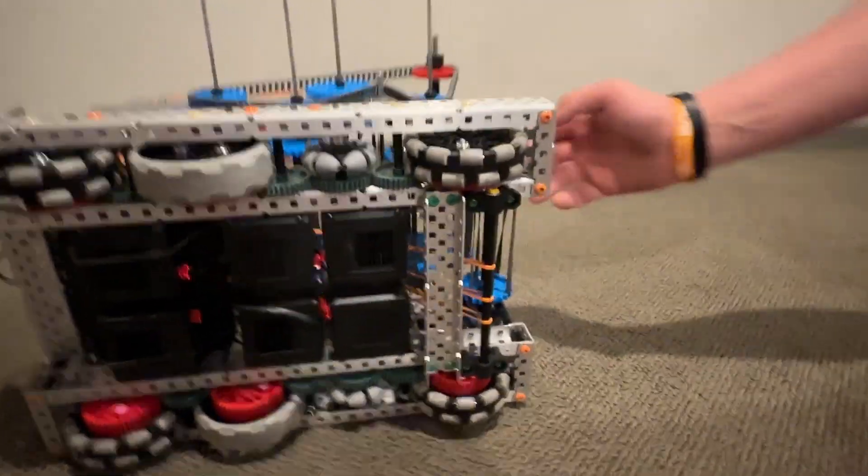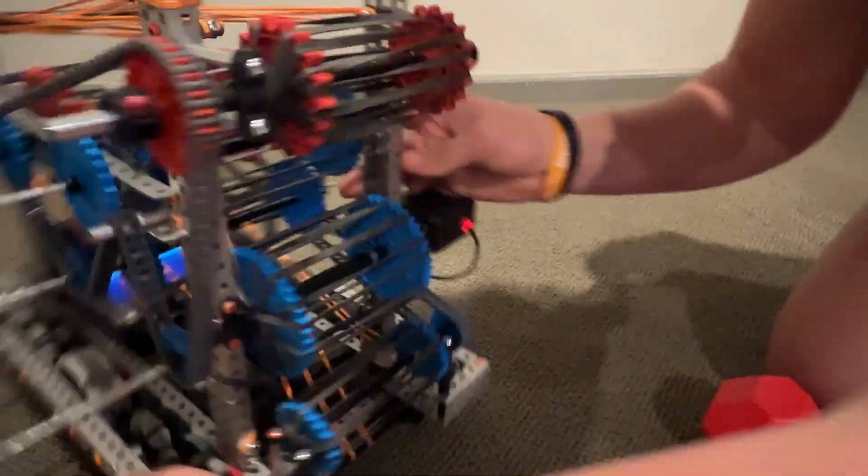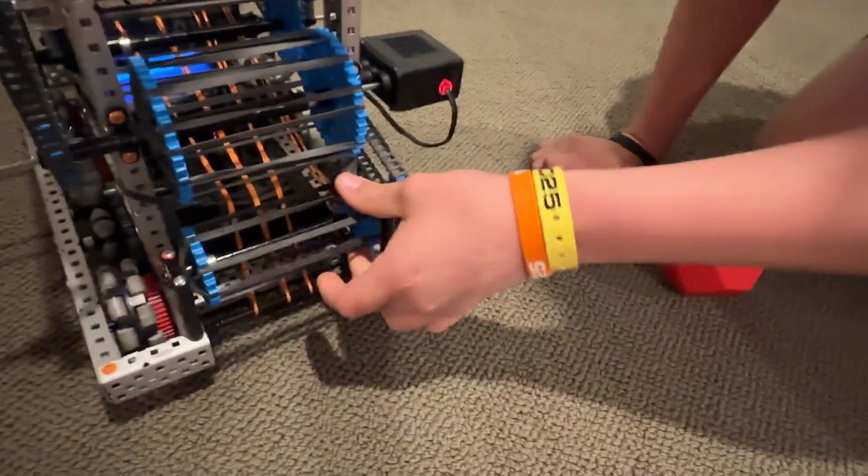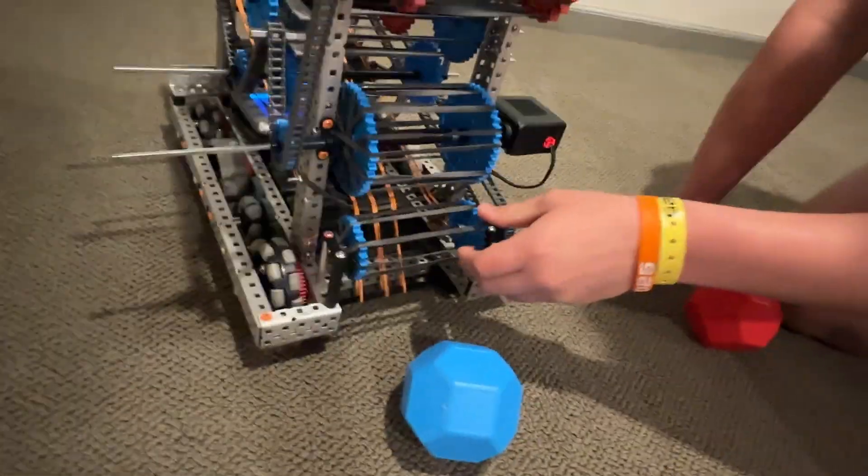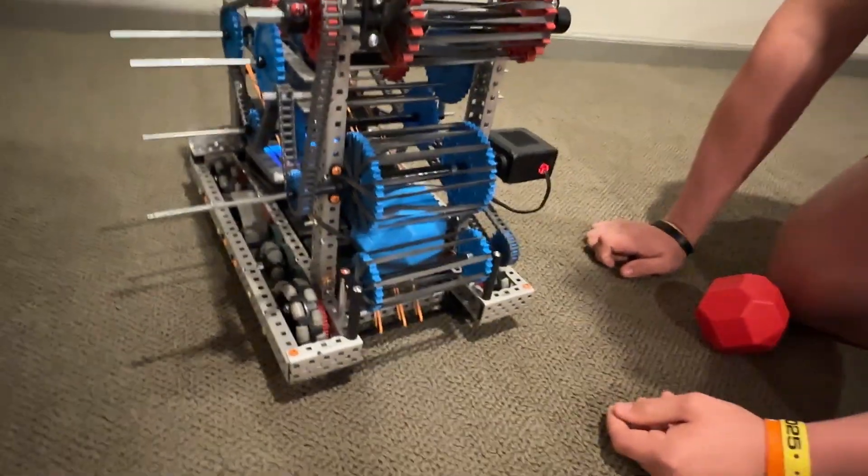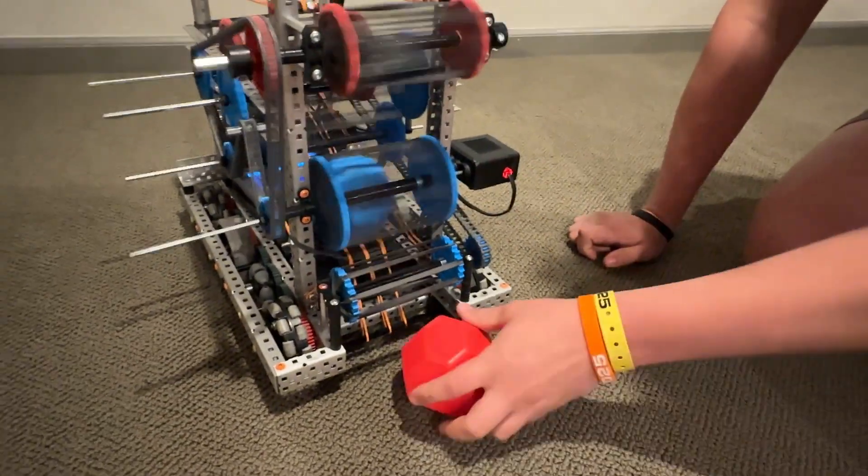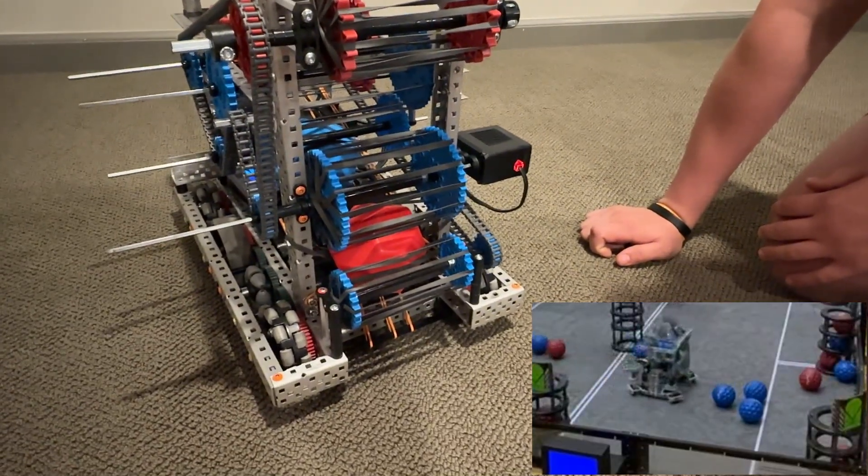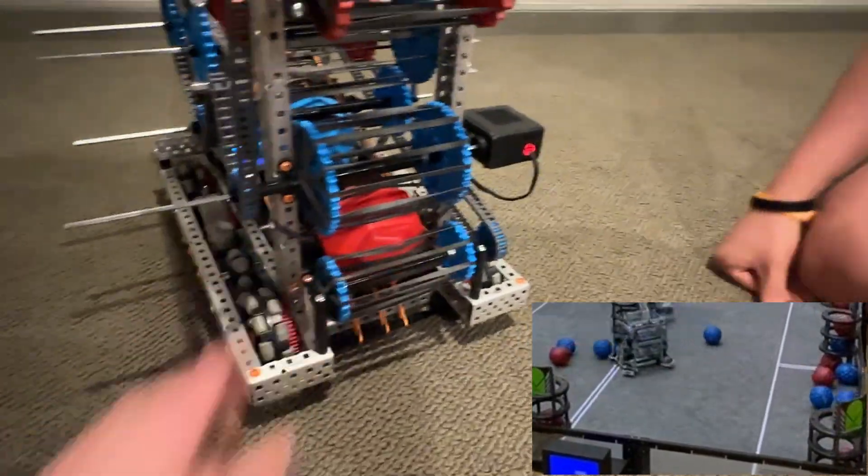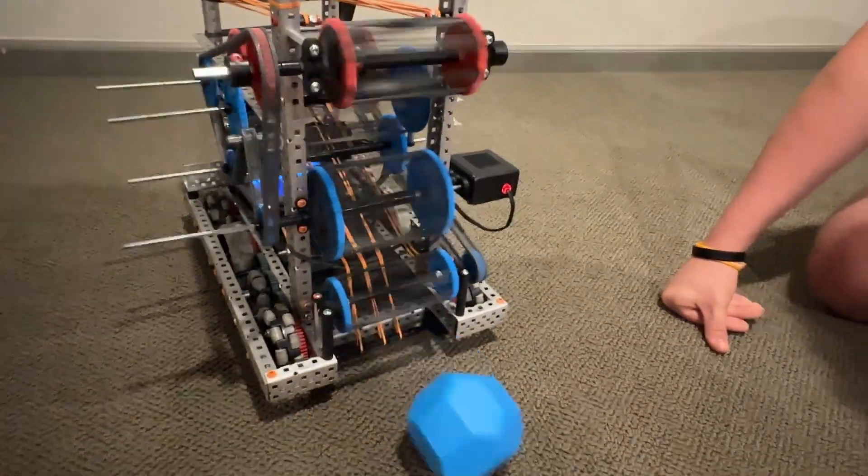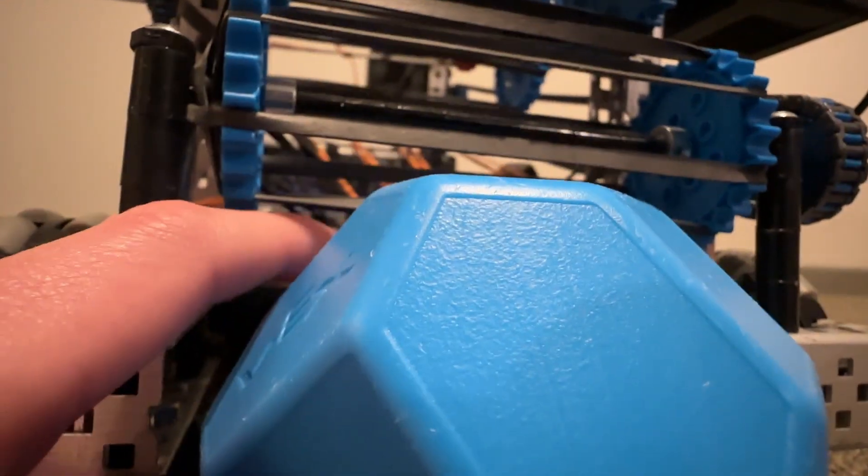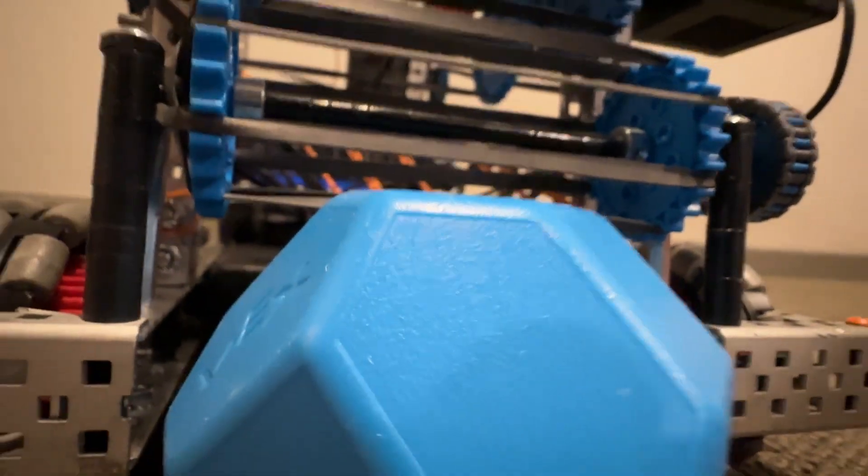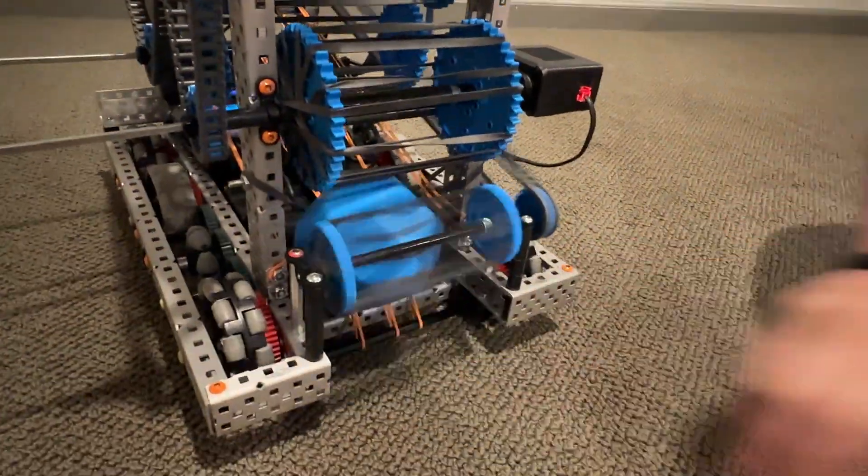We were originally going to have a drop down intake, but we decided to go with just a regular rubber band drum intake that just picks it up and then we can cycle. So that was based off of my changeup robot. Basically you just pick them off right up the ground. It doesn't even have to move or anything. It's really easy to build. Rubber bands gives us a little bit of force for the bottom.